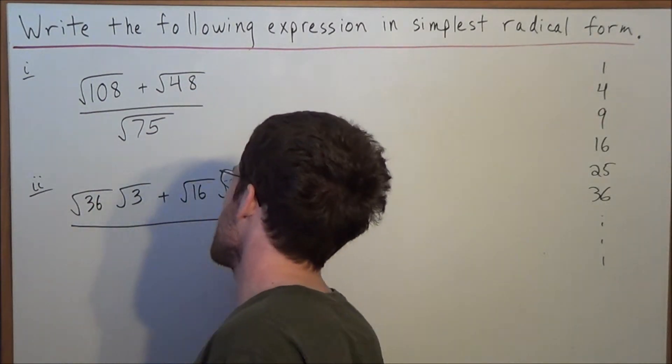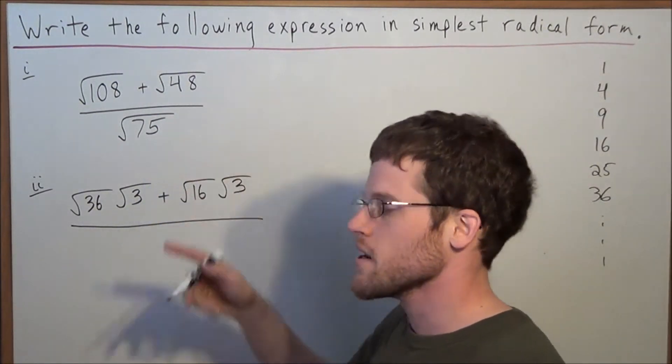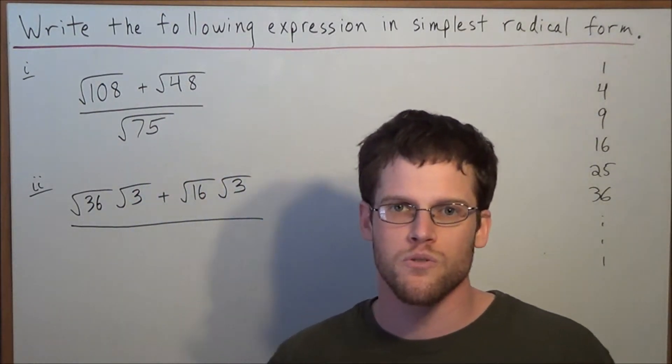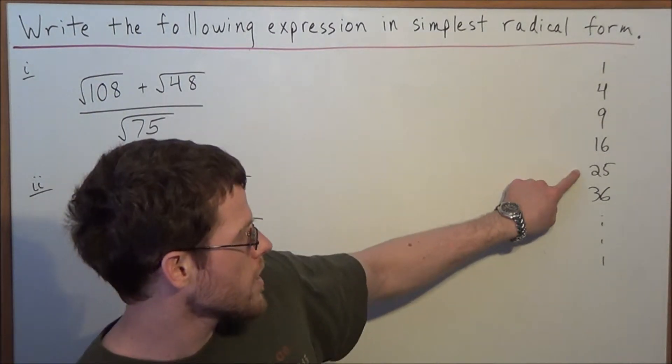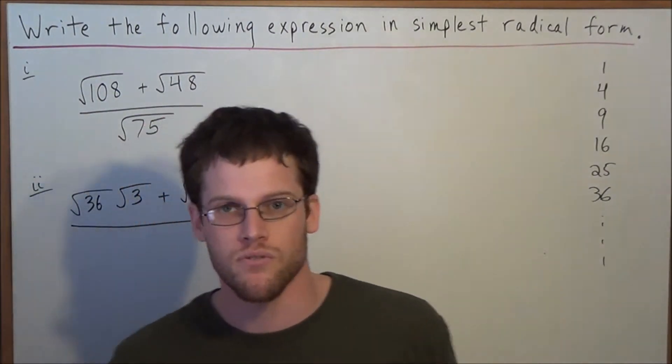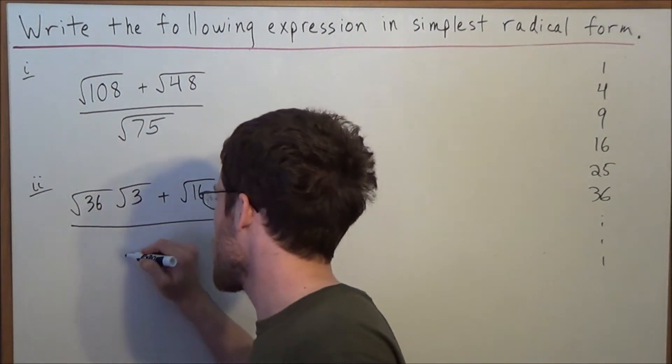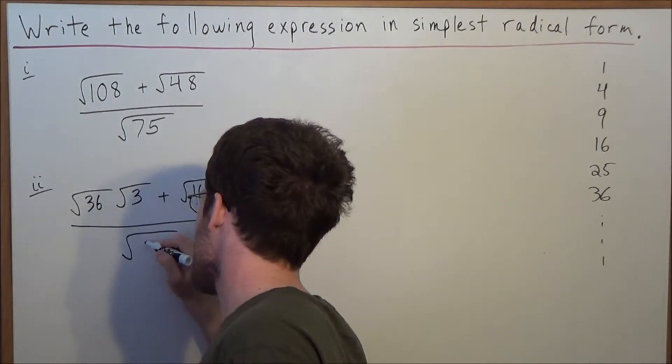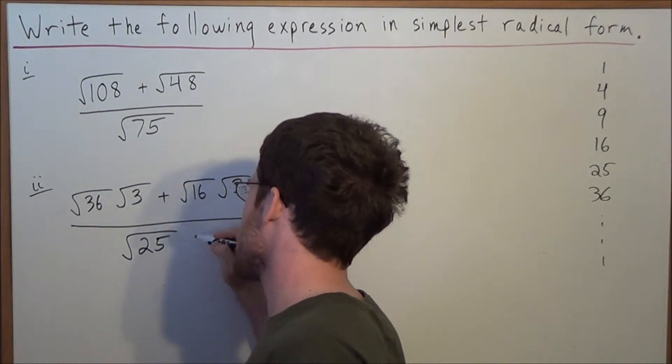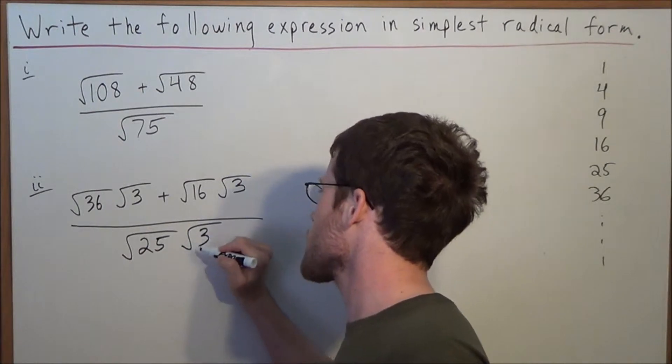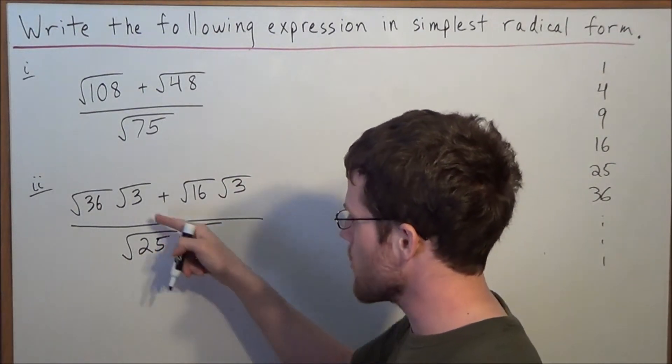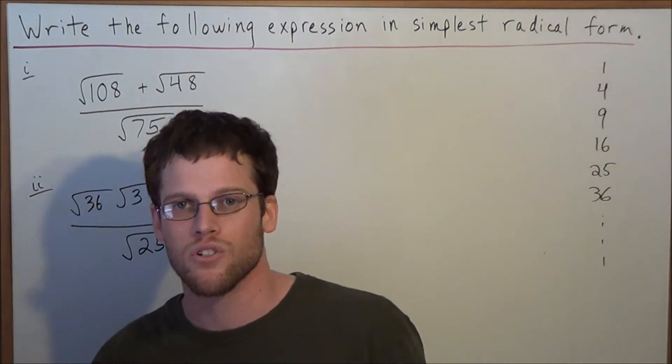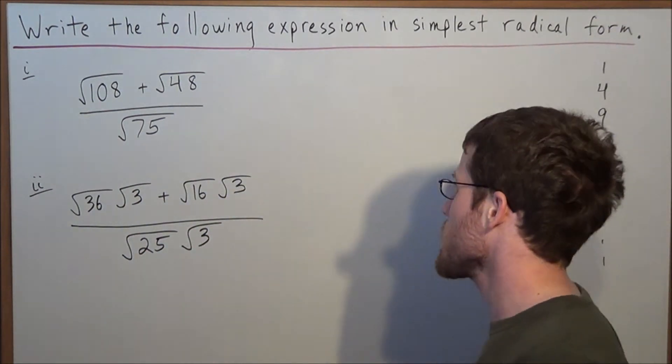And finally, even though this number is bigger than 48, it's easier to recognize because we use quarters every day. 75 could be broken down into 25 times 3. So we have 75 and we're writing it as radical 25 times radical 3. And you'll notice right away that each of these terms have a radical 3 now. So something should go off saying that you're going in the right direction.